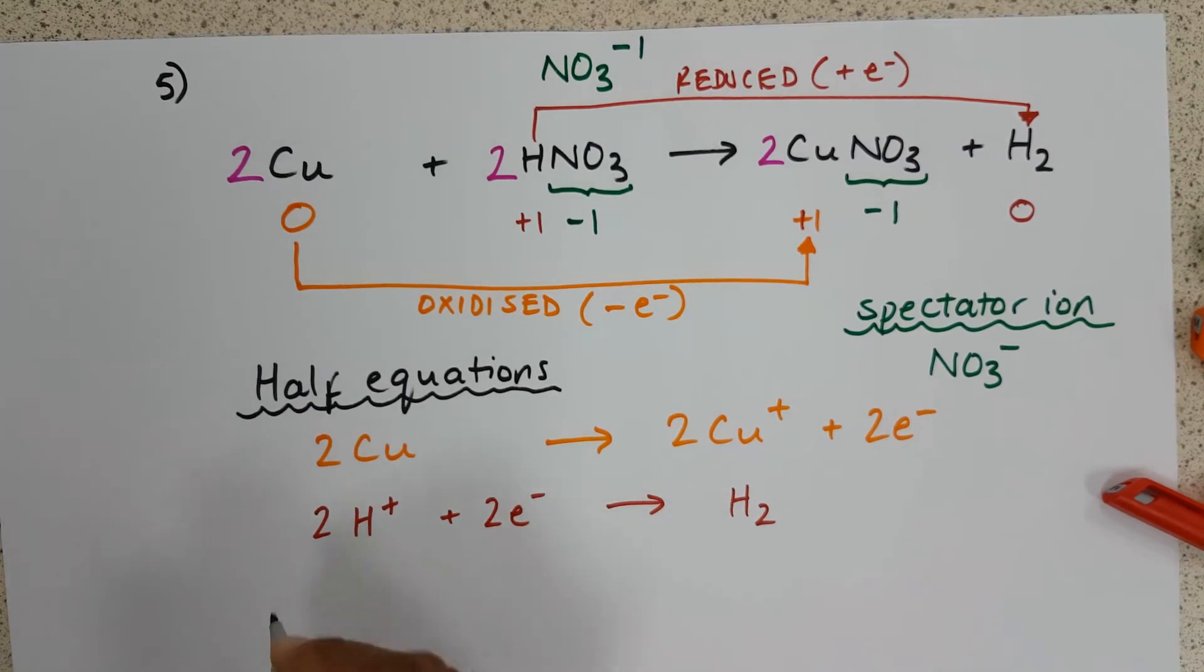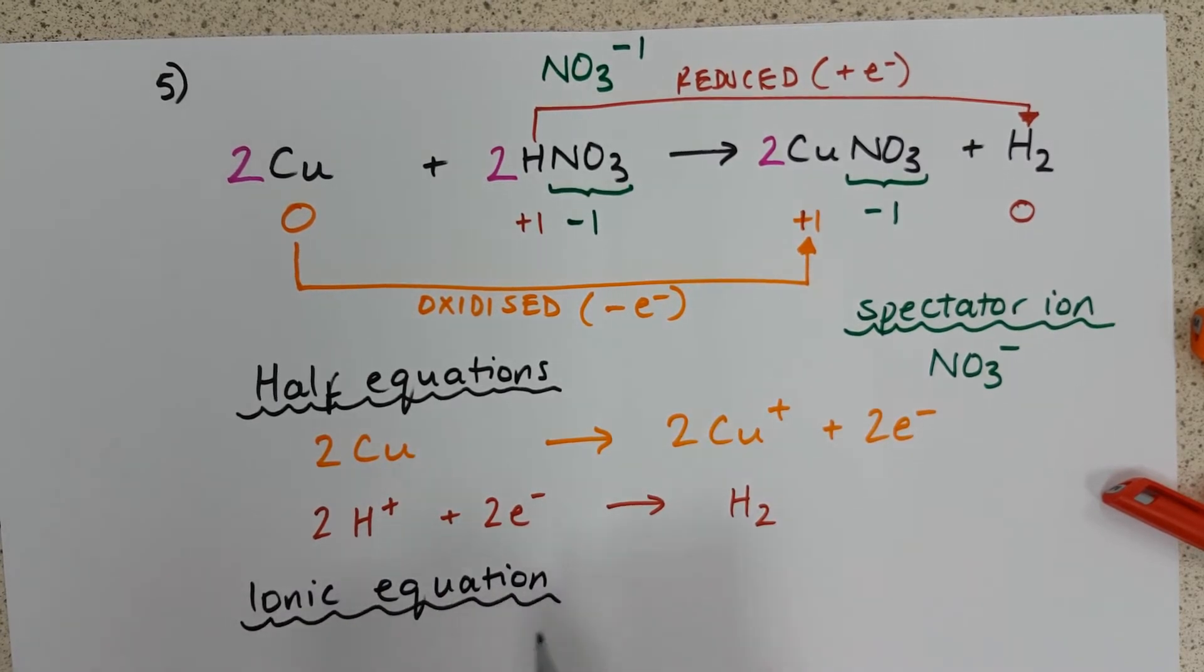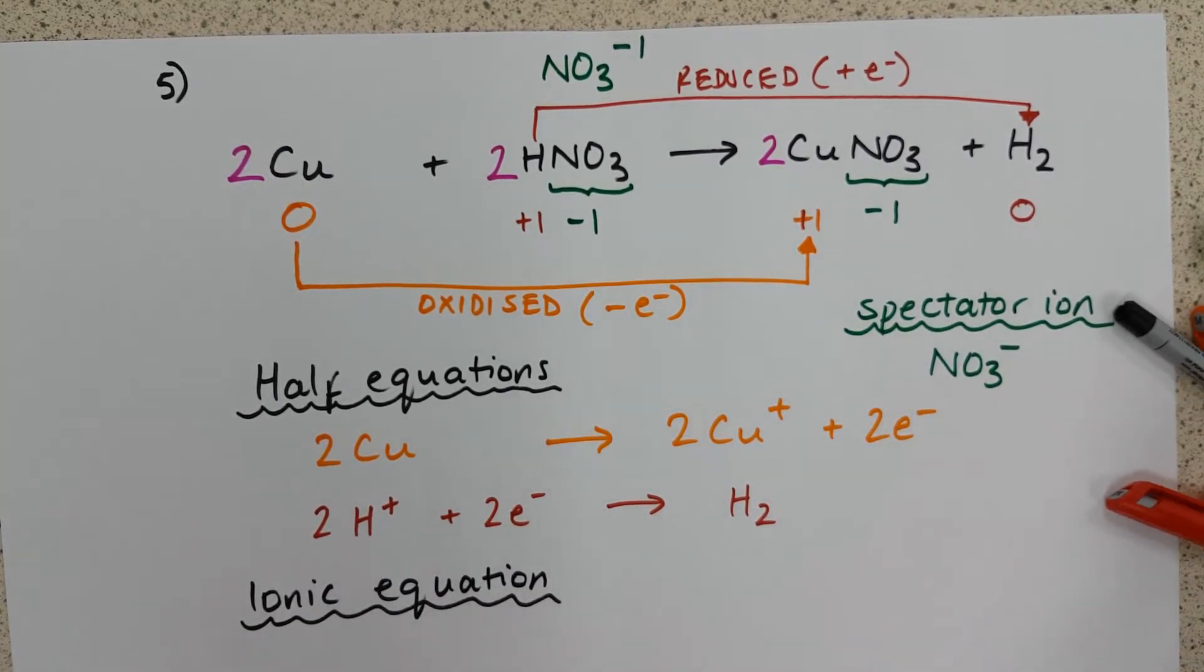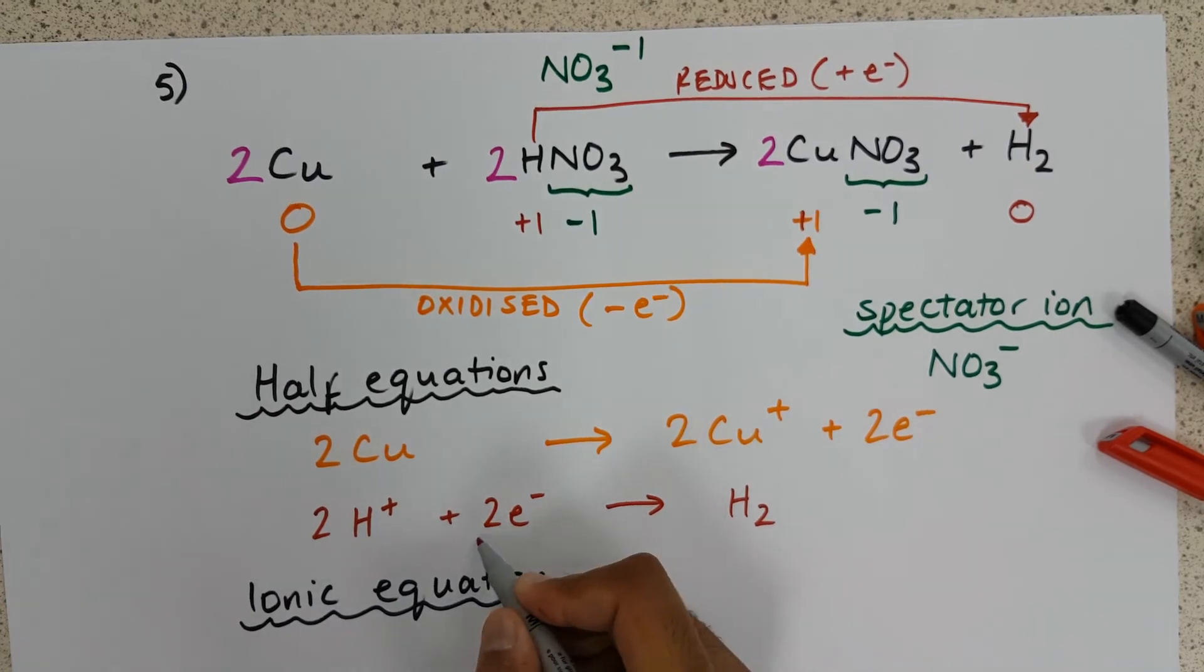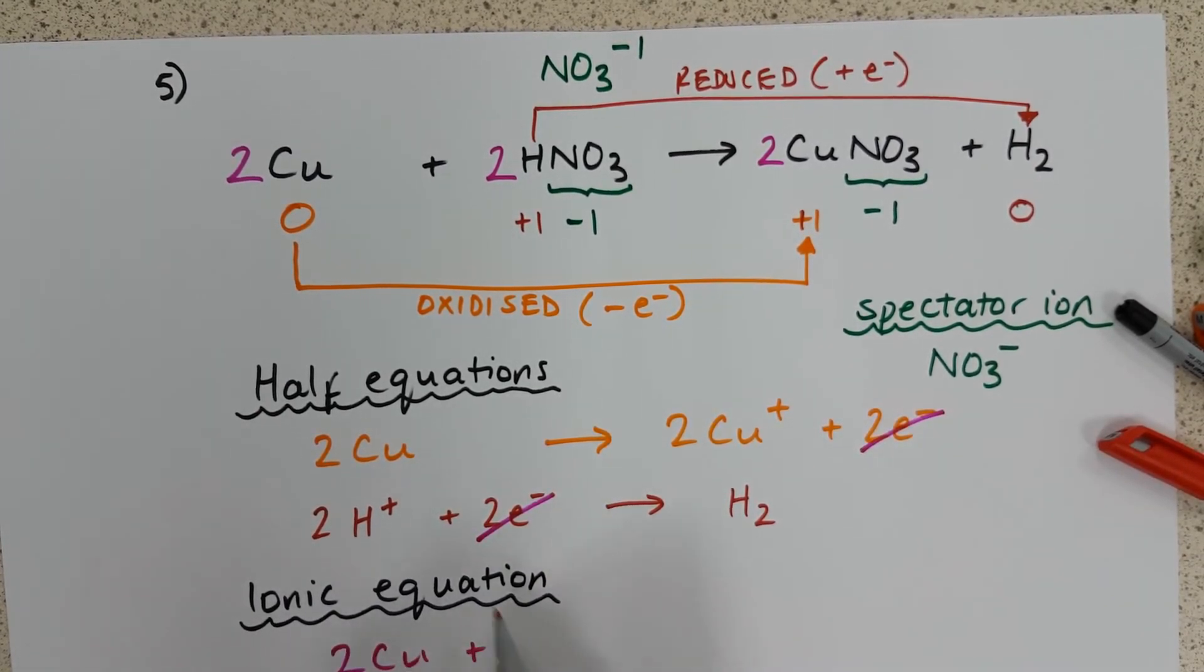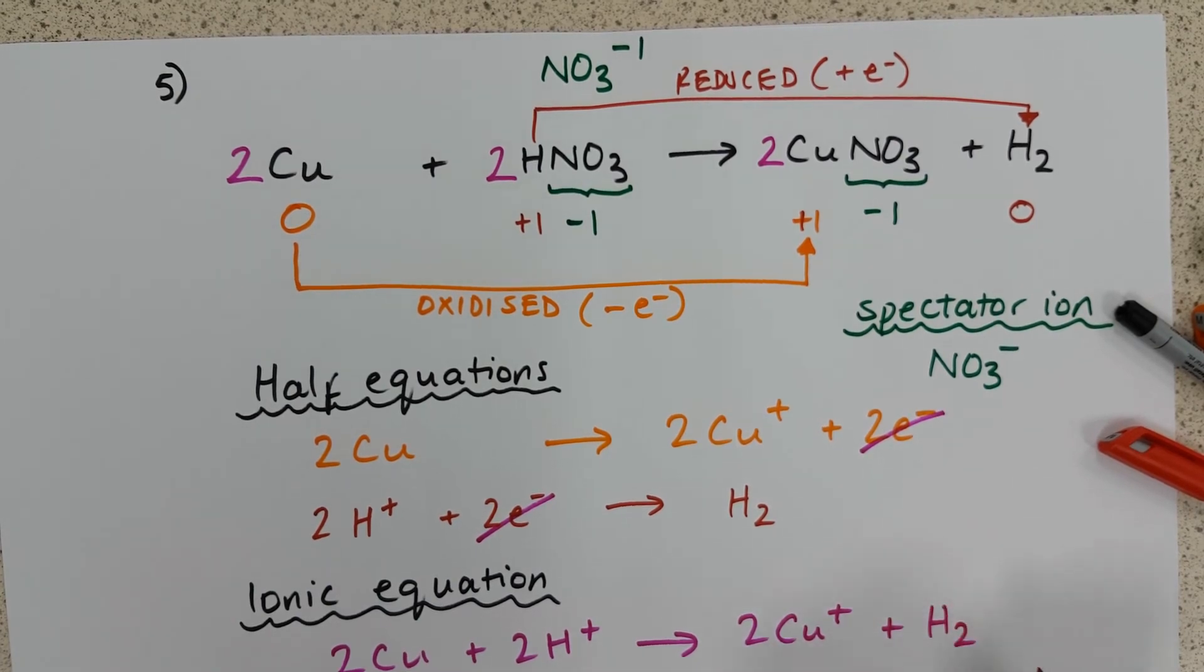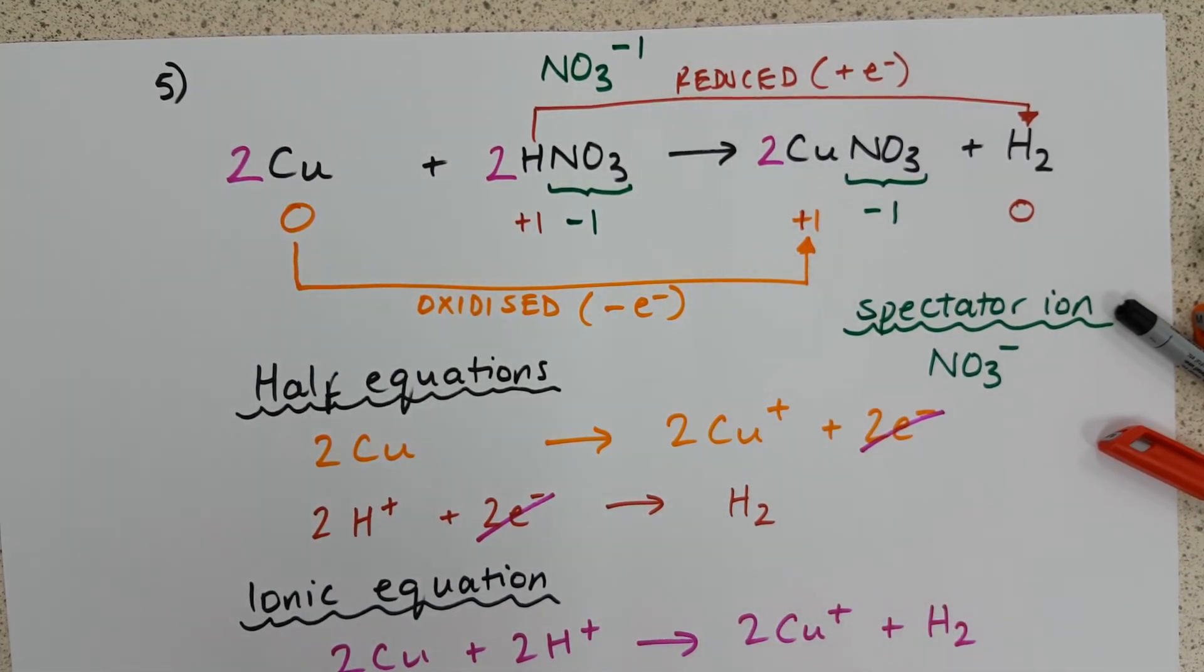So if we combine those two into our ionic equation, we can eliminate two electrons, and take 2Cu plus 2H+, makes 2Cu+ plus H2. And that is the reaction sorted.